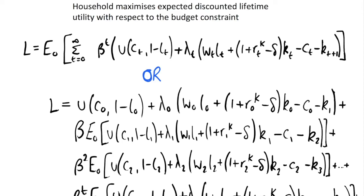In the previous video we looked at real business cycle models, the assumptions they make, and then we looked at the household problem and the firm's problem that they are maximizing. In this video we're going to use the results from the previous one — make sure to look at that — but this should hopefully still make some sense even without that video. So we have a household that is maximizing the expected discounted lifetime utility with respect to the budget constraint.